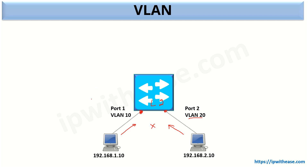On the other hand, if we connect another device on port number 3, that host will be able to communicate with the device which is part of the same VLAN. So port number 3 is part of VLAN number 10, and hence both these devices will be able to communicate to each other since they are part of the same VLAN.